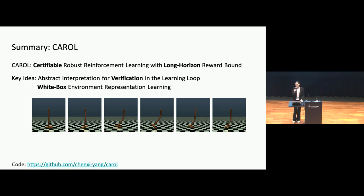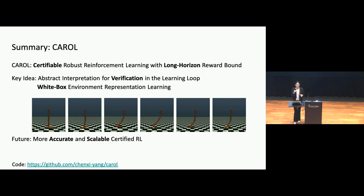In summary, our method provides a way to certify reinforcement learning policies, and we also present a learning algorithm that can provide a more certifiable reinforcement learning policy with long-horizon reward bounds. Our key ideas are two-fold: first, we incorporate verification in the loop; and second, instead of reasoning over a black-box environment, we learn a white-box environment representation together with the policy. For future work, we believe more accurate and scalable certified reinforcement learning methods would benefit this area.